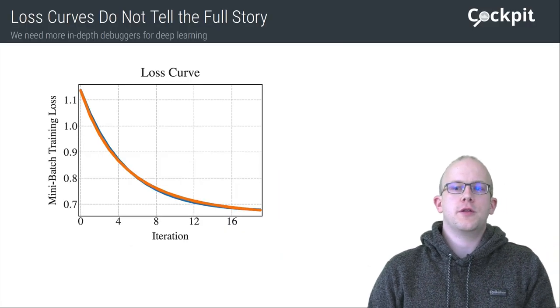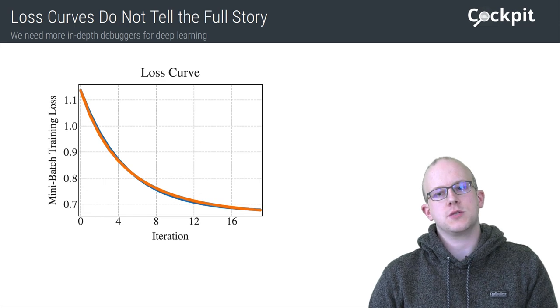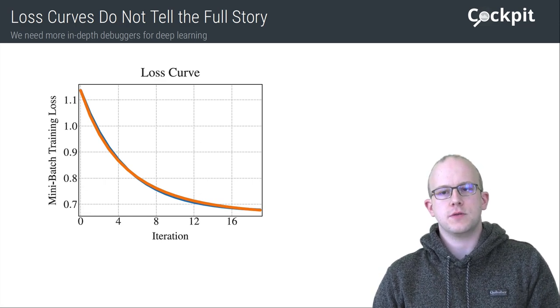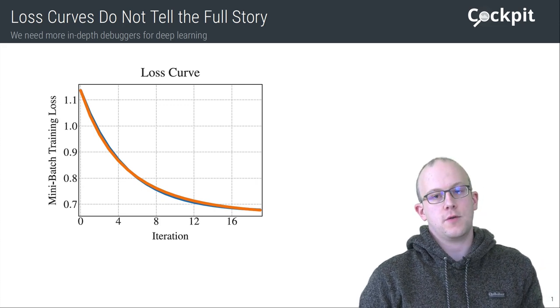The most popular approach to monitor training neural networks is to track the mini-batch loss, but such a simple diagnostic fails to describe what is going on inside the network.